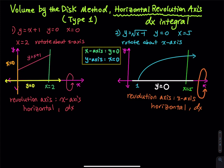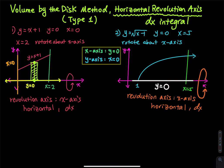When finding the area, use top curve minus bottom curve. To identify which is top and which is bottom, draw a line or rectangle in the region using the midpoint rule. You can see the top of the rectangle touches y equals x plus 1, and the bottom touches y equals 0. So the top curve is y equals x plus 1, and the bottom curve is y equals 0.